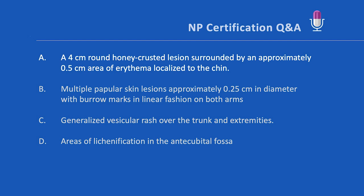We're also told this child has a single skin lesion, and scabies simply does not present as a single skin lesion. There will be multiple lesions, often starting as papular skin lesions about 0.25 centimeters in diameter with characteristic burrow marks. The arms are a very common place for scabies, but the face is actually an uncommon location. Scabies typically doesn't give you honey-crusted lesions.